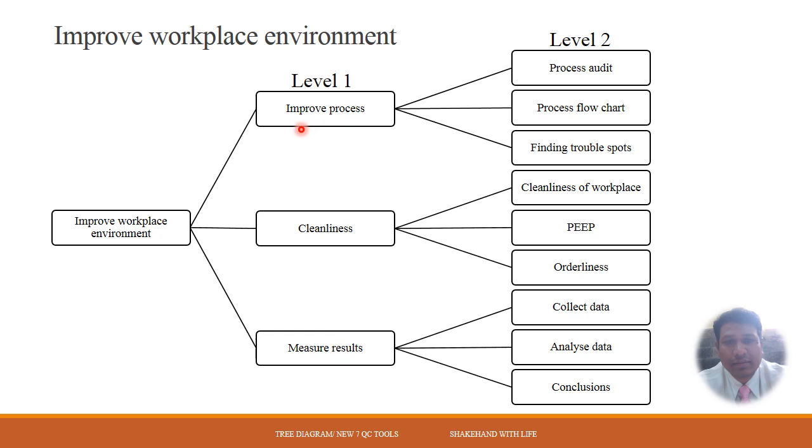Now, Improve Process. How can we improve the Process? Three more options come out here. The Process can be improved by auditing the Process. The Process can improve by making a flow chart for the Process and finding the trouble spots of this Process.